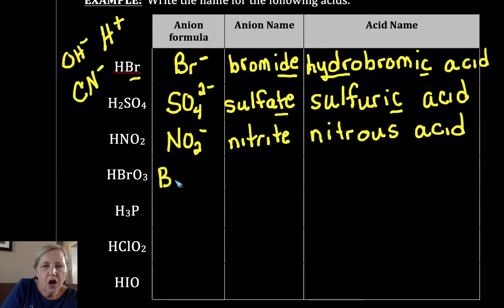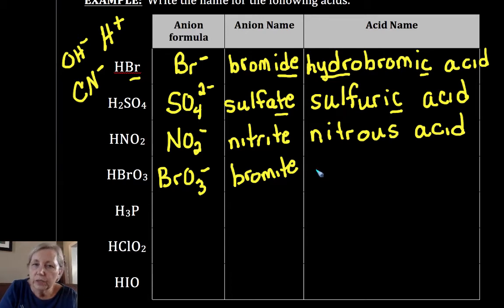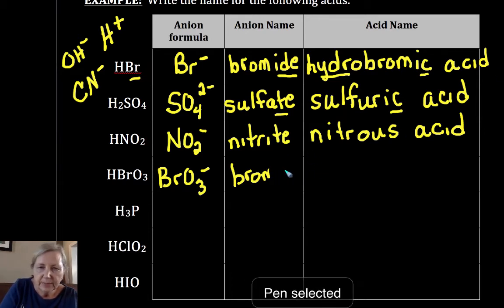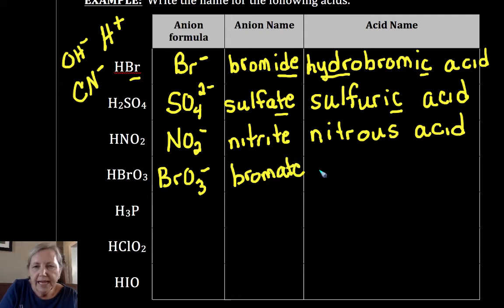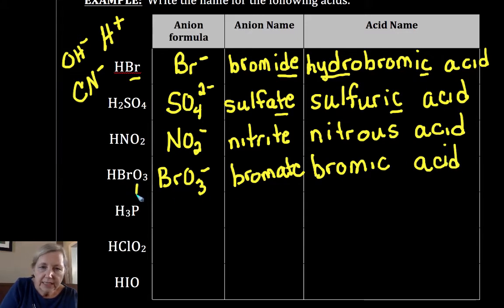Now we've got BrO3-. Bromate, almost made a mistake there. That's the bromate ion. -Ate goes to -ic. Bromic acid. There's an oxygen in there, so don't get tempted to add that hydro. Because remember, hydro, no O.